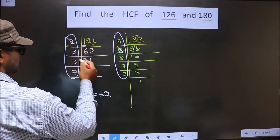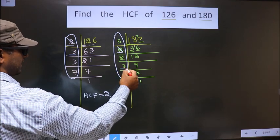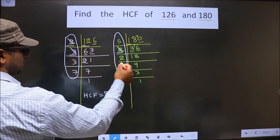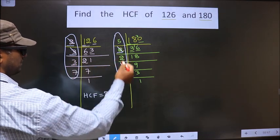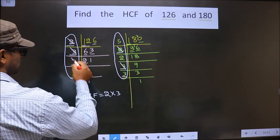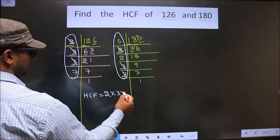So you cut 2 and write here. Now, next number is 3. Do we have 3 here? Yes. So you cut 3 and write here. Next number is 3. Do we have 3 here? Yes. So you cut 3 and write here.